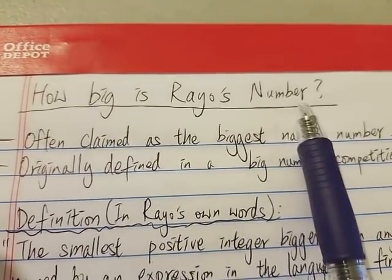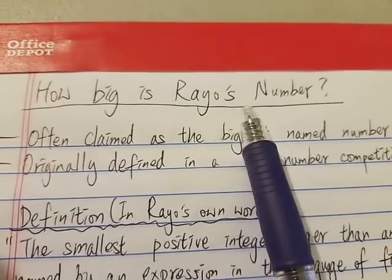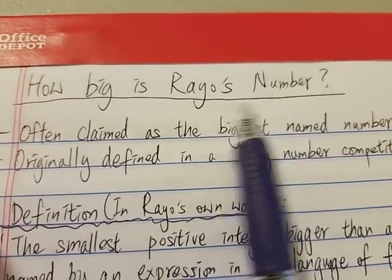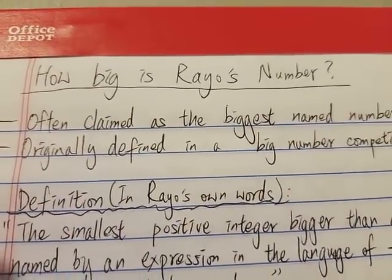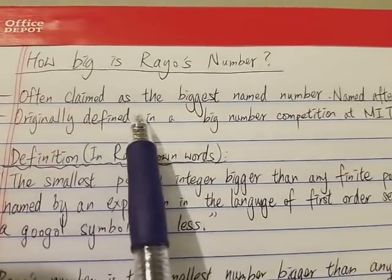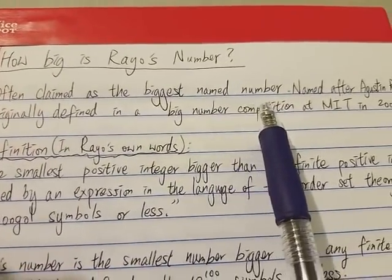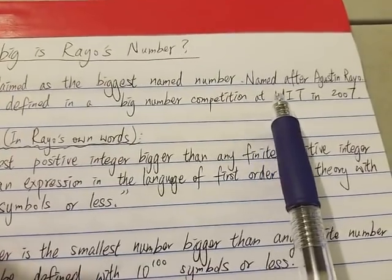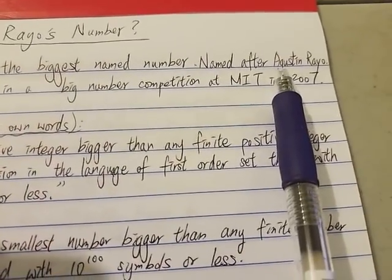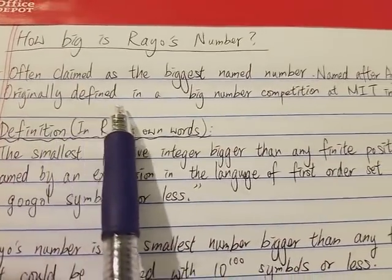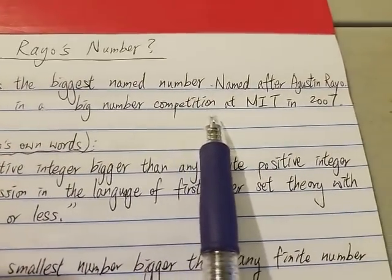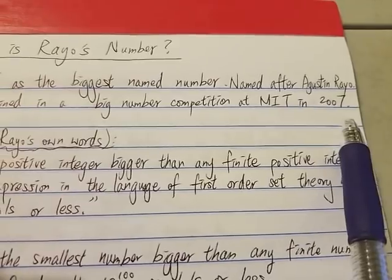So what is Rayo's number and what makes it so big, bigger than any named number? It is often claimed as the biggest named number, named after a guy named Augustin Rayo. It was originally defined in a big number competition at MIT in 2007.